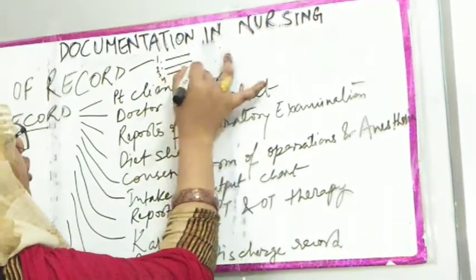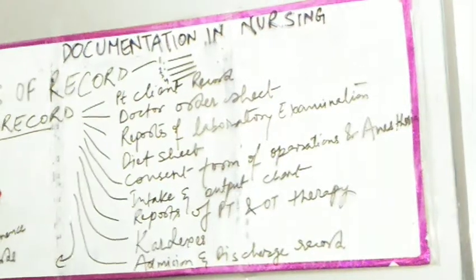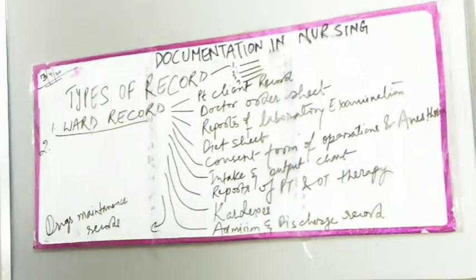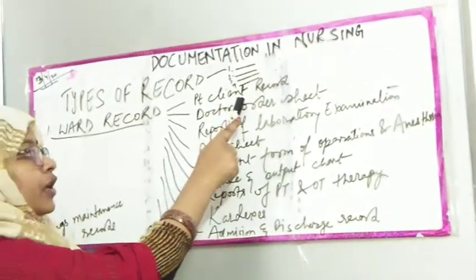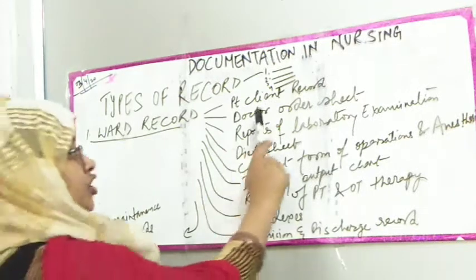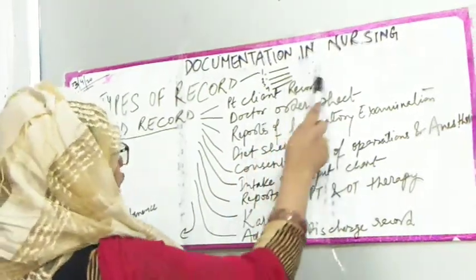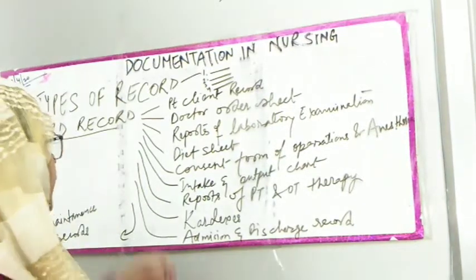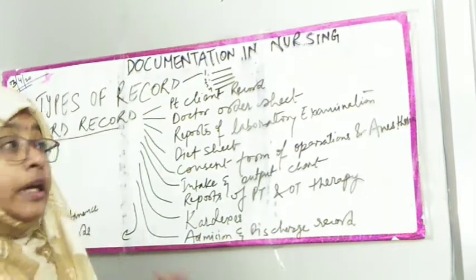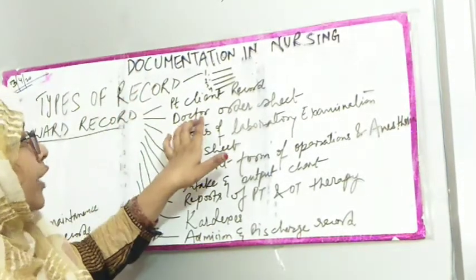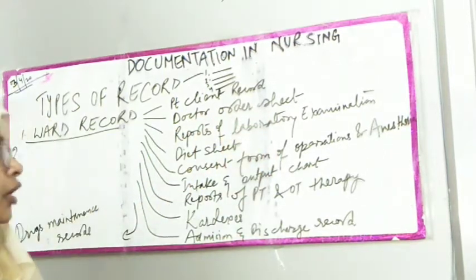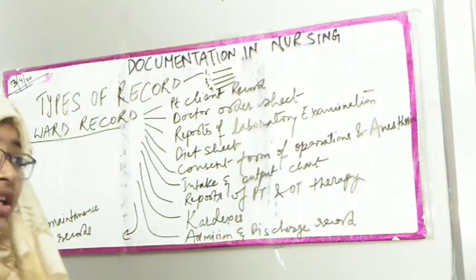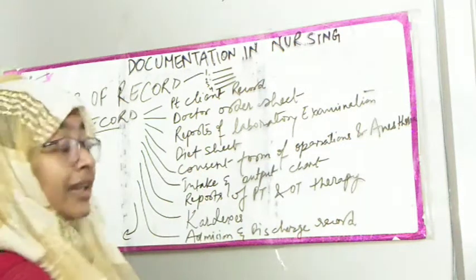The patient client record includes subjective and objective assessment and plan. The doctor order sheet tells nurses which drugs to provide the patient, the timing — for example twice a day — how much dosage, and what diagnostic tests will be done.